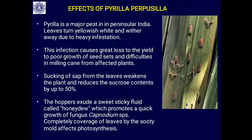The effects of Pyrilla perpusilla: both larvae and adult flies feed on sugarcane leaves. It is a major pest in peninsular India, Bangladesh, and Sri Lanka. The leaves turn yellowish-white and wither away due to heavy infestation. The infection causes great loss to yield, poor growth, and reduces seed quality. The sucking of sap affects the sugar content and juice yield of sugarcane, and also causes difficulties in milling the cane.